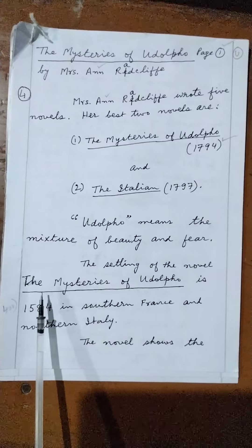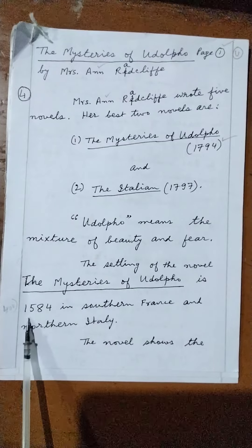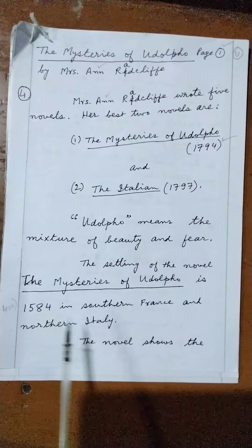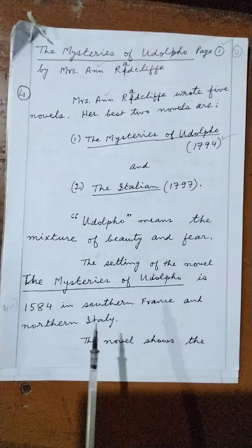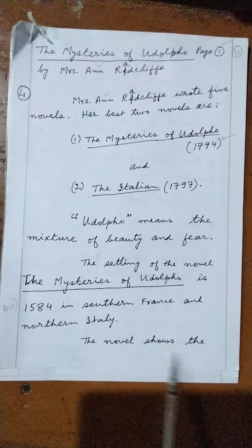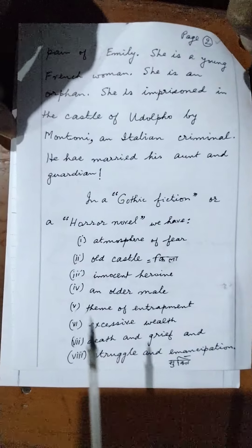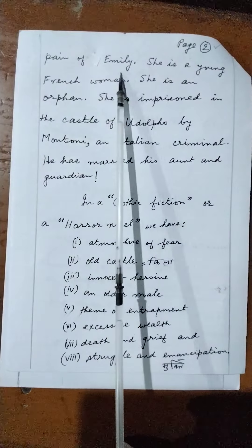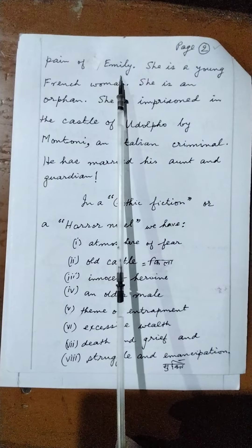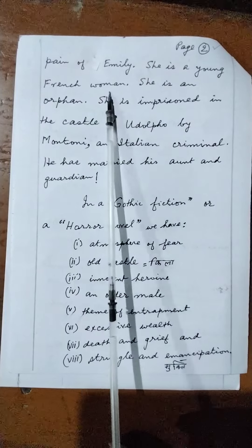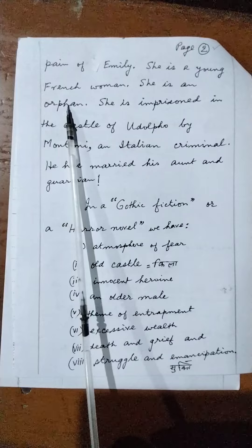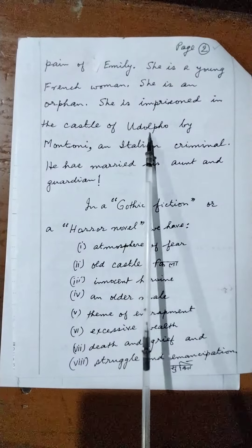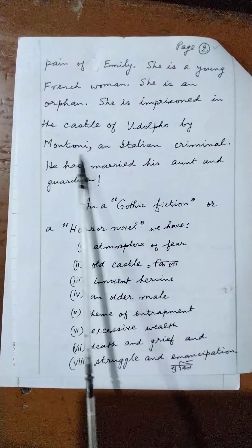The setting of The Mysteries of Udolpho is 1584, in southern France and northern Italy. The novel shows the pain of Emily, the heroine. She is a young French woman and an orphan, imprisoned in the castle of Udolpho by Montoni, an Italian villain.